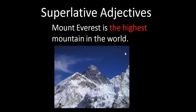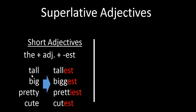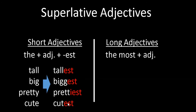Of all the mountains in the world, many are high, but there is only one number one — the highest. In other words, no mountain is higher than Mount Everest. For short adjectives, we form the superlative with 'the' plus the adjective plus '-est'. So: tall → the tallest, big → the biggest, pretty → the prettiest, cute → the cutest.